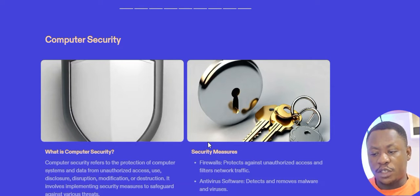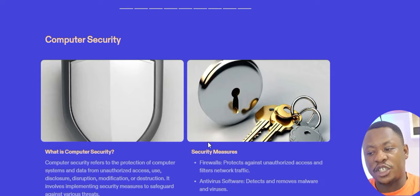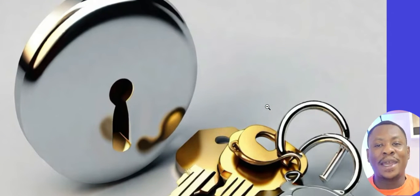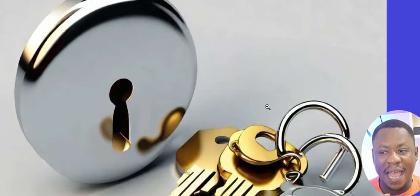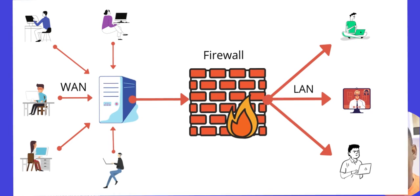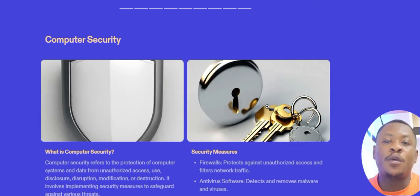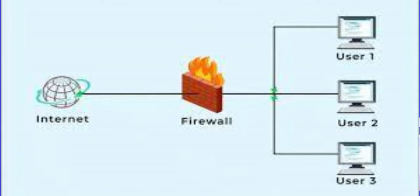Computer security refers to the protection of computer systems and data from unauthorized access, use, disclosure, disruption, modification, or destruction. It involves implementing security measures to safeguard against various threats. Basically, we are talking about locking and protecting something from being attacked or stolen. One key measure is firewalls, which protect against unauthorized access and filter network traffic — anything coming into the computer that is not good gets prevented.